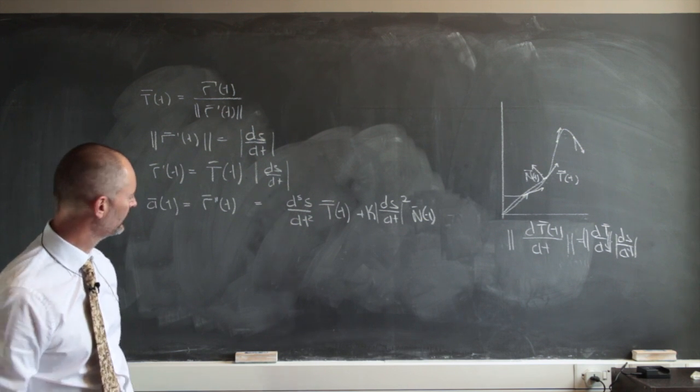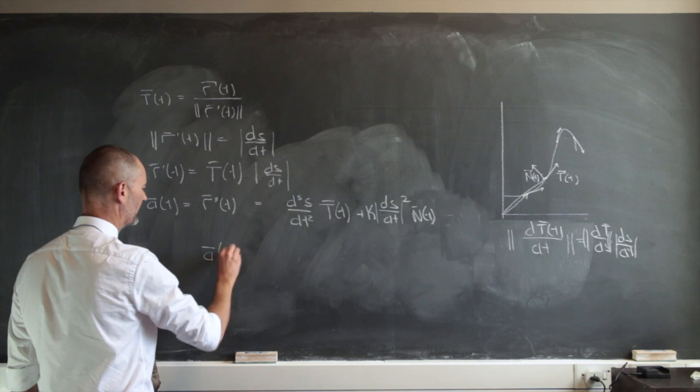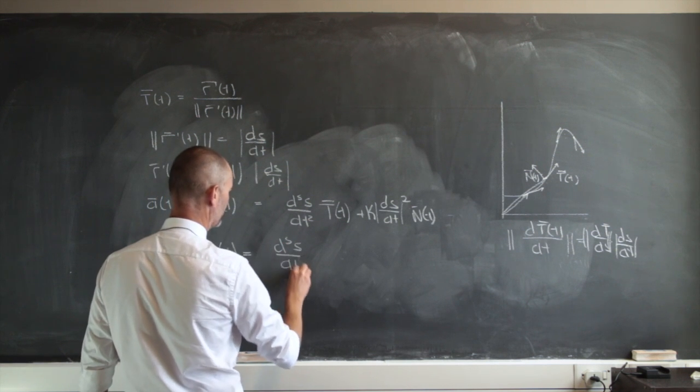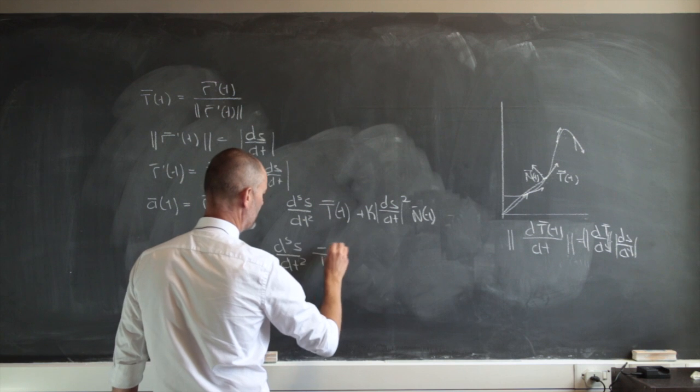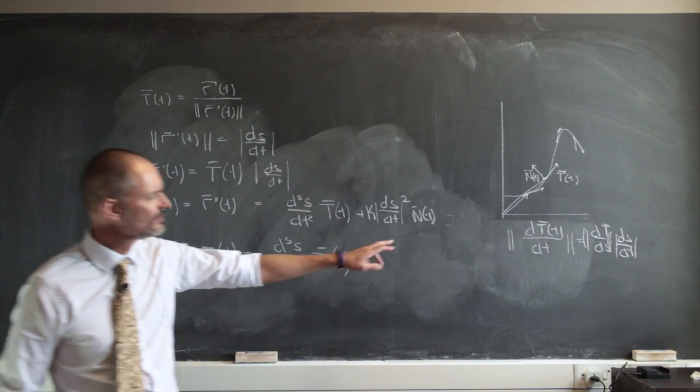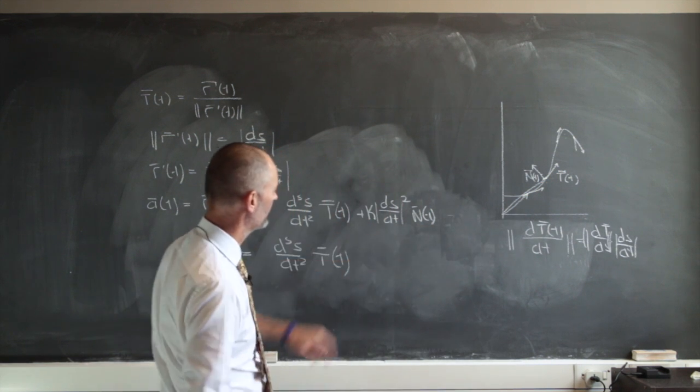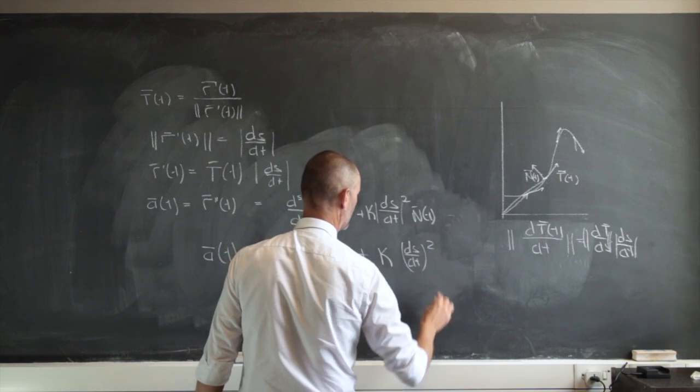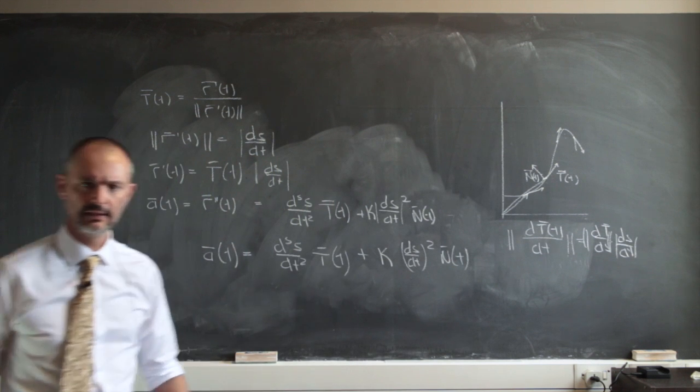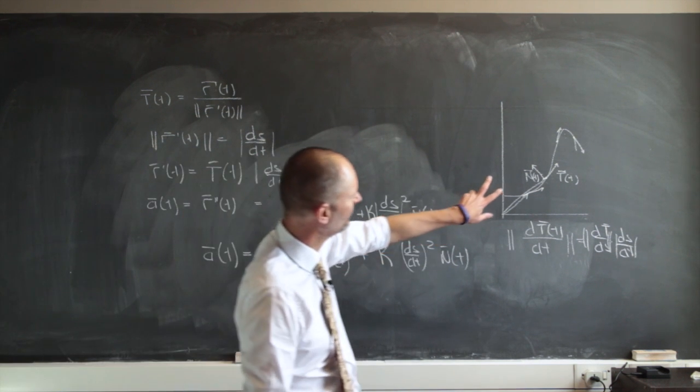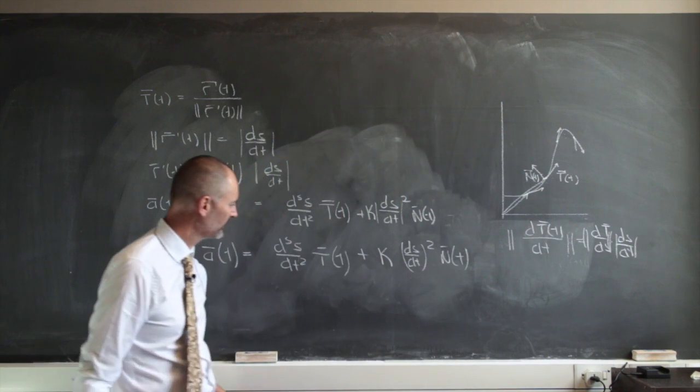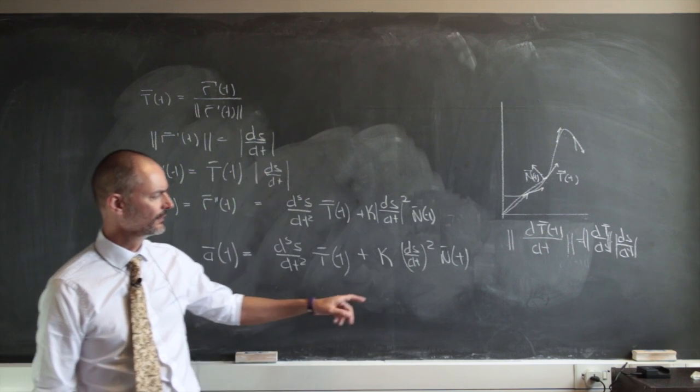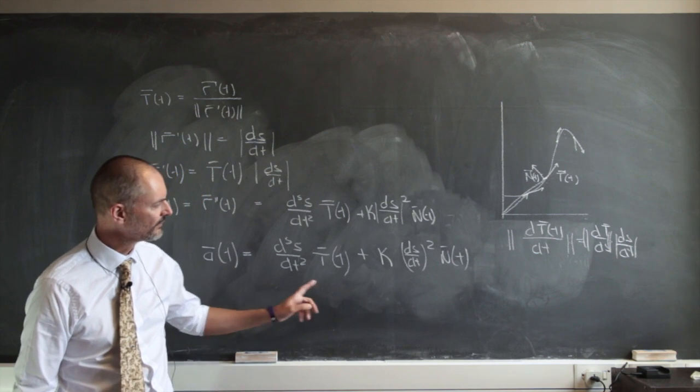So now we have this. That acceleration has got two components. It's the second derivative there, d squared s dt squared, and this tangent. So it's got a tangent component. And it also has this kappa ds dt squared n of t. It has this component in the normal unit vector, principal normal unit vector. So acceleration is always going to have these two components. And this becomes very helpful when we derive another form of an equation for curvature.